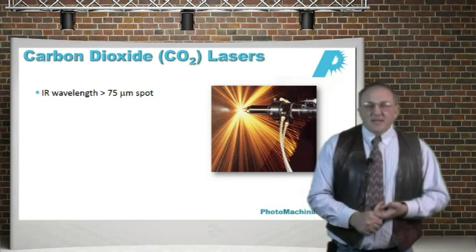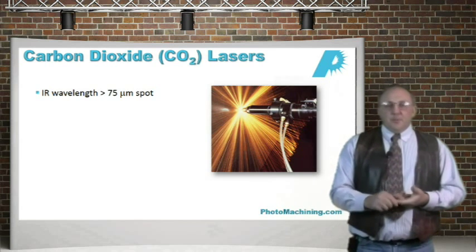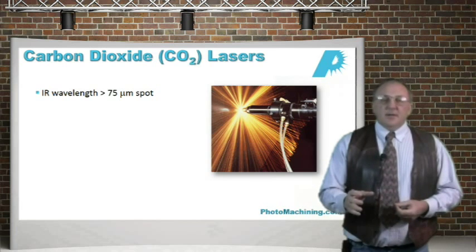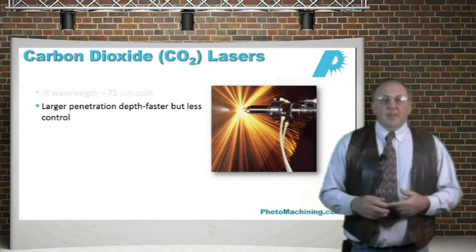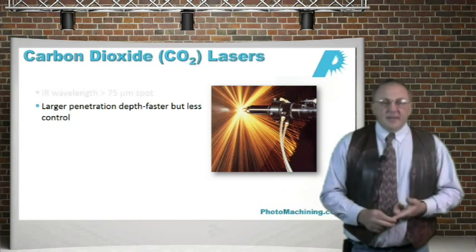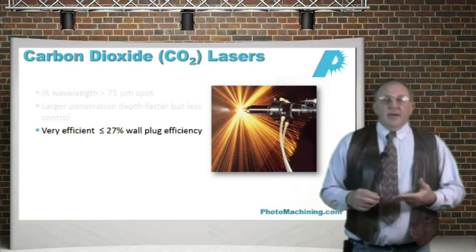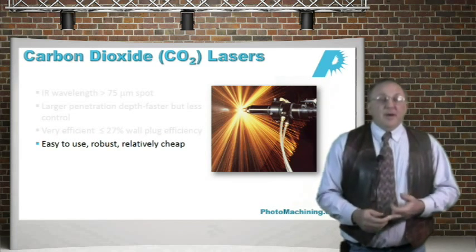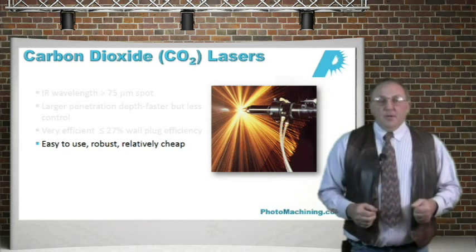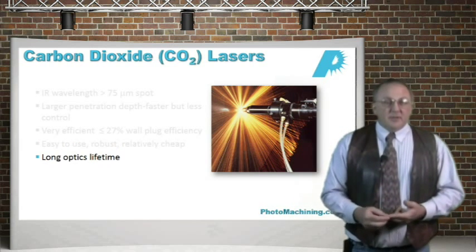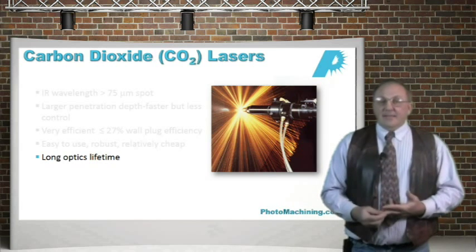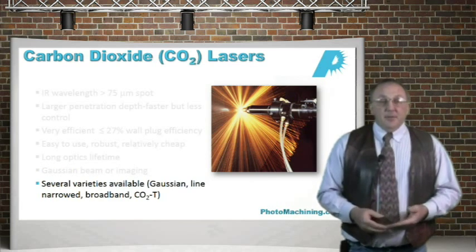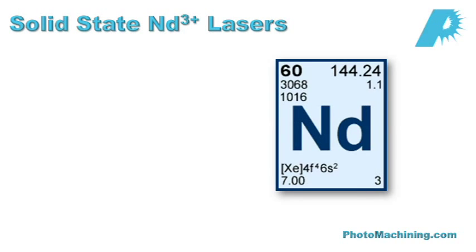The smallest spot size you can get with a CO2 laser is approximately 75 microns in an industrial environment with normal optics. You get large penetration depths — faster but less control. It's a very efficient laser, about 27% wall-plug efficiency, compared to an excimer laser at about 2%. CO2 lasers are very easy to use, robust, relatively cheap, long-lasting, with optics that generally last a long time, and there are many different kinds commercially available.